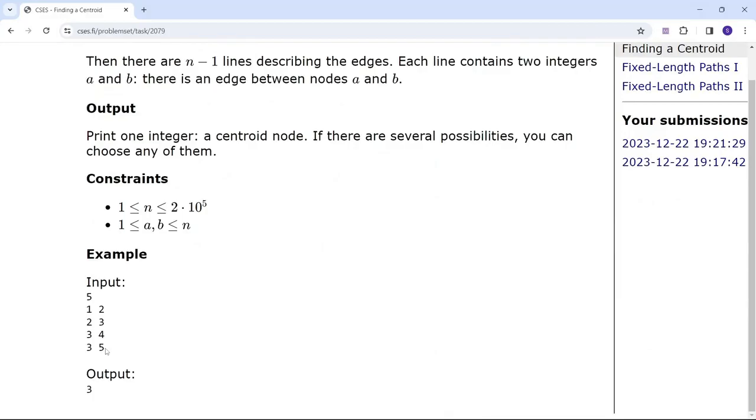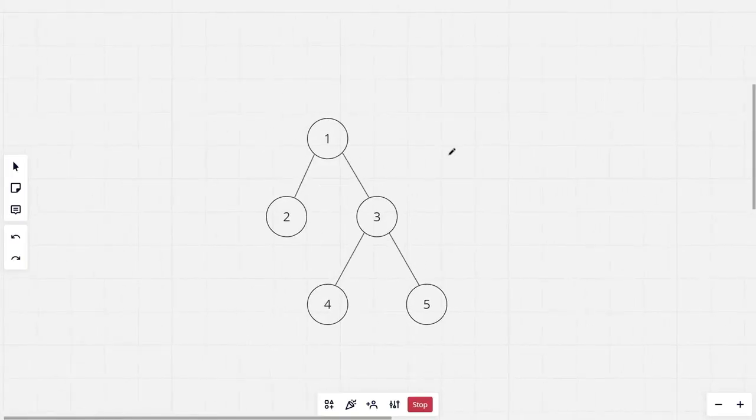This is the given sample tree. Now in this tree we have five nodes, so 5 by 2 is 2. So for the centroid, the children should have maximum subtree size of 2.